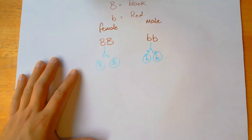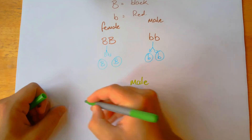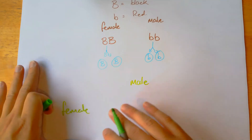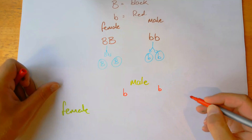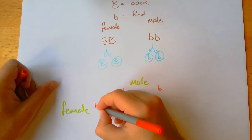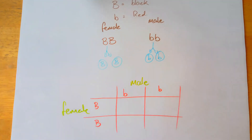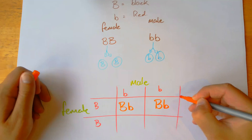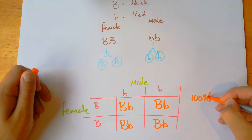Now we find the possible combinations. We put the male gametes on top and the female gametes on the side — it's important to identify them as male and female, because when we look at sex linkage later it will be less confusing. The male has two recessive alleles and the female has two dominant alleles. All four combinations give us heterozygous — big B, little b — so we get 100% black coat.